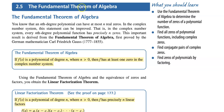Lesson 2.5, the Fundamental Theorem of Algebra. What you should learn: how to use the fundamental theorem of algebra to find the number of zeros of a polynomial function; how to find those zeros including the complex zeros; and how to find conjugate pairs of complex zeros and then find the zeros by factoring.